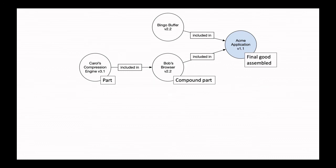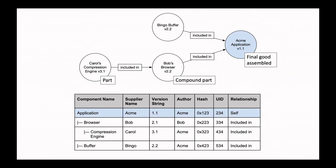A user or consumer of a software system most likely sees the final good assembled. What's missing today — and what should be exposed by better SBOM transparency data — is all of the component parts within that final good assembled. In addition to the graph concept, it's also possible to represent this information in a table. This graph and this table represent the same information, helping explain the conceptual model of an SBOM. In practice, there will be so much SBOM data that won't fit on a screen, and we will need tools to produce, consume, and exchange SBOM information.